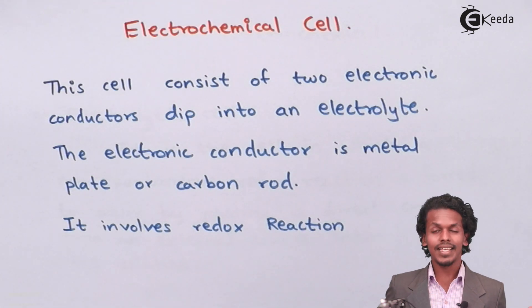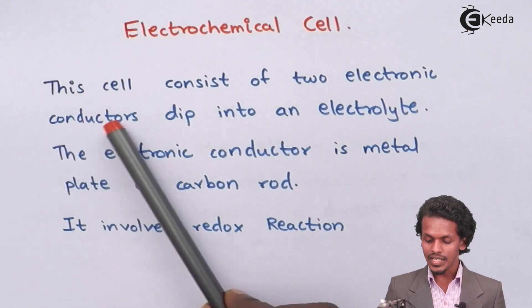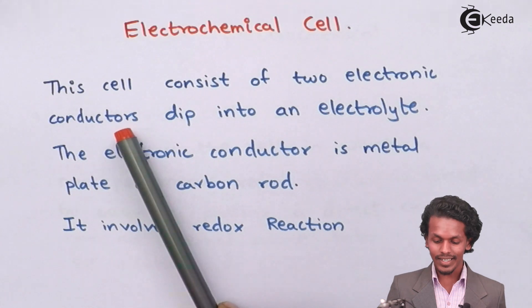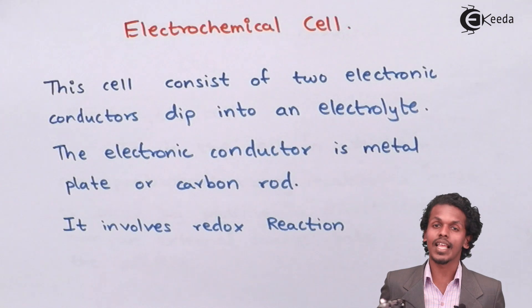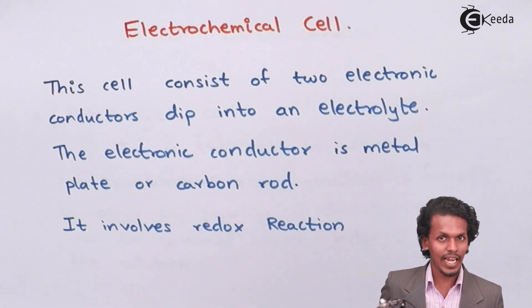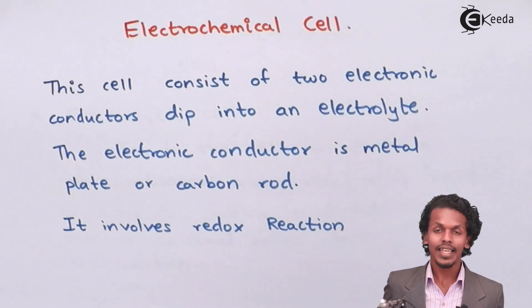So electrochemical cell is nothing but a cell which consists of two electronic conductors that is dipped in electrolyte. In this case the two electronic conductors, among one will be served as an anode while the other will serve as a cathode.